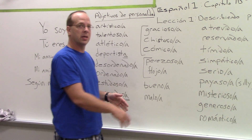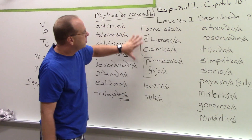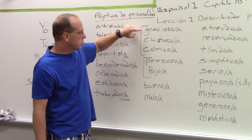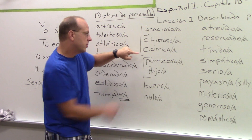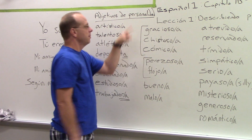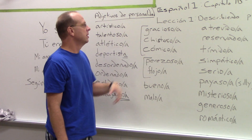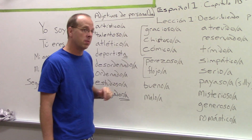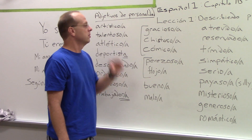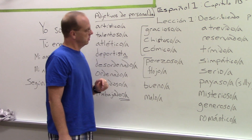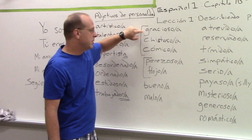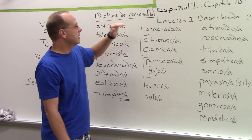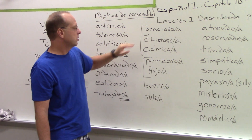Now we're going to the second column. These three words all mean the same thing, so as long as you can figure out what one of them means, you know what they all mean. Gracioso, chistoso — which is the one I use the most — and cómico. Gracioso is a false cognate; it does not mean gracious. Gracioso, chistoso, cómico.